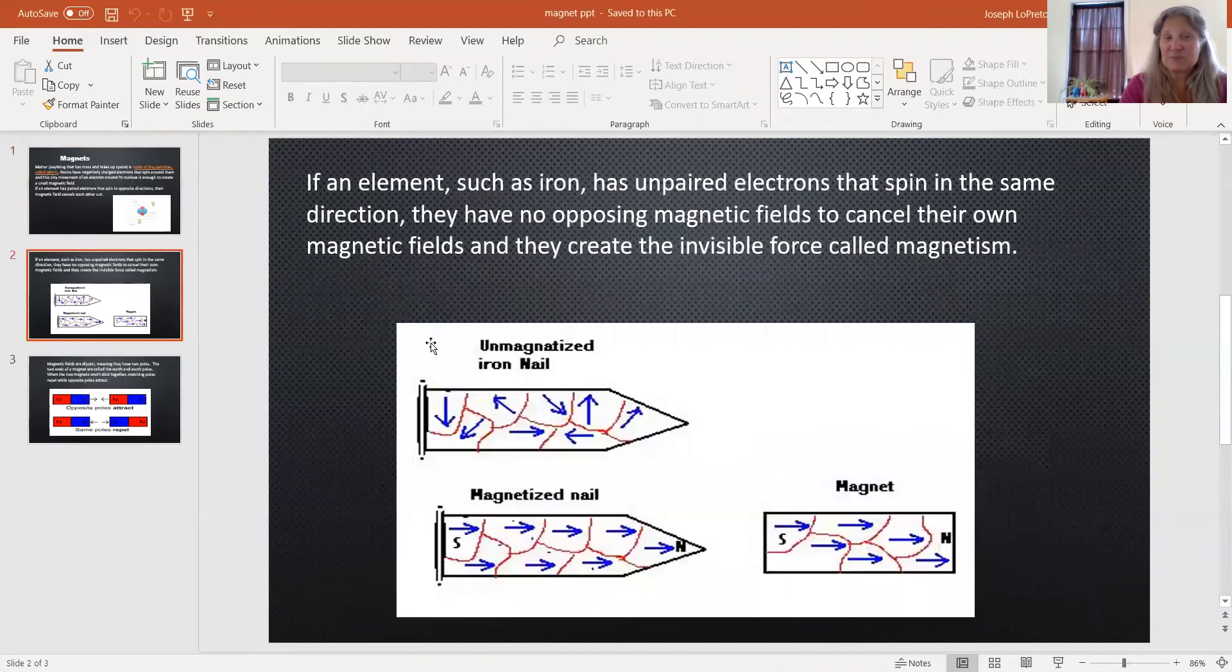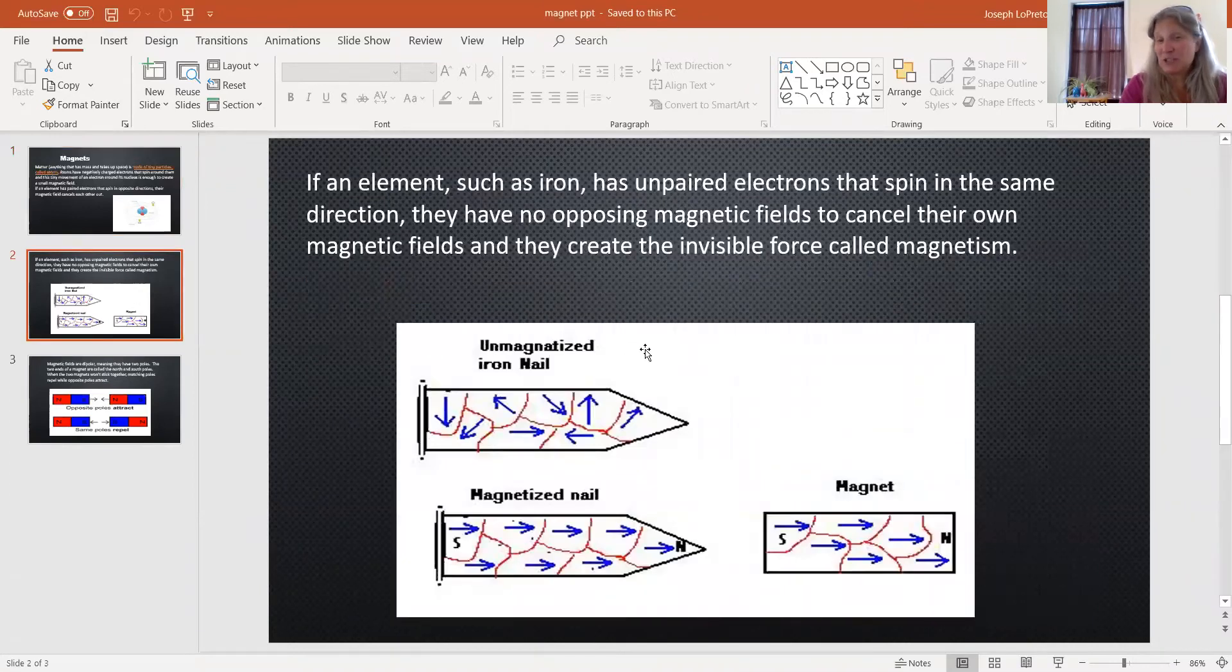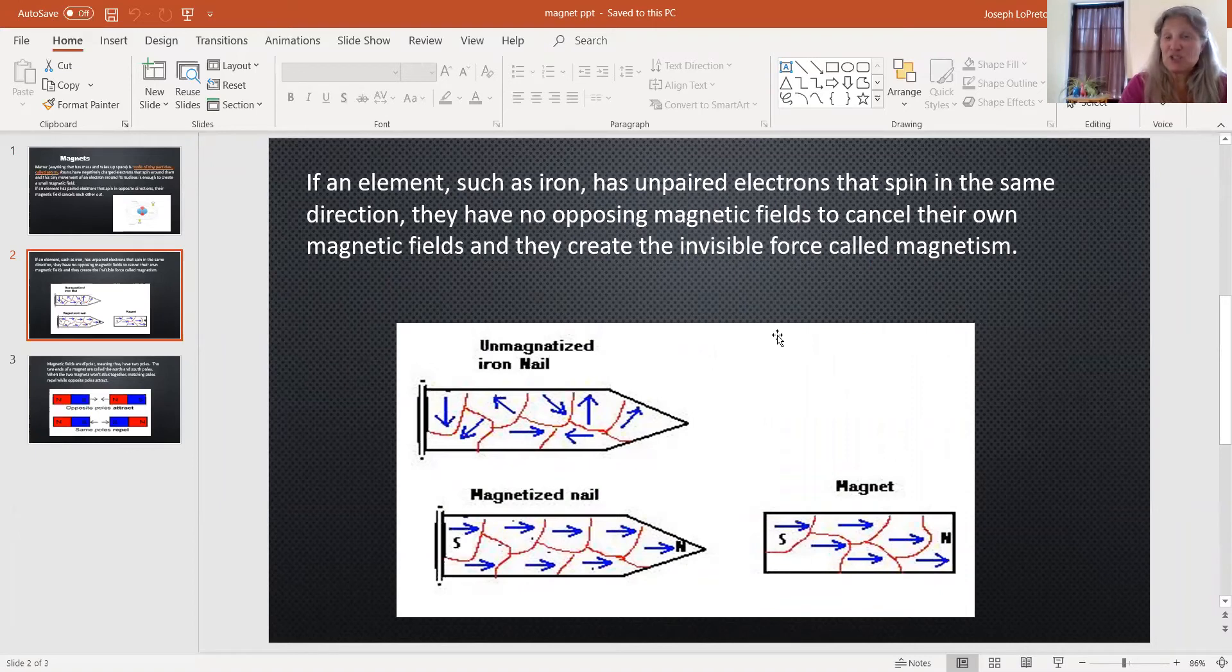But in certain things like iron, they have unpaired electrons. And they're going to spin in the same direction, so there's no opposing one that's going to cancel them out. And they're going to have an invisible force around them called magnetism. The iron nails are going to be attracted to magnets.